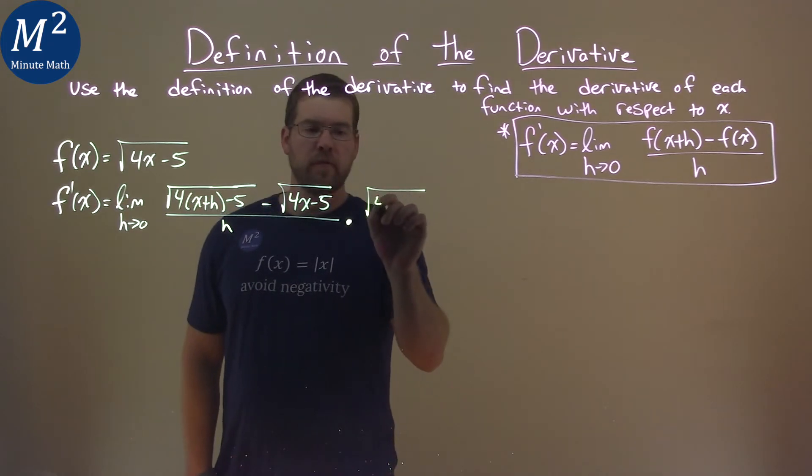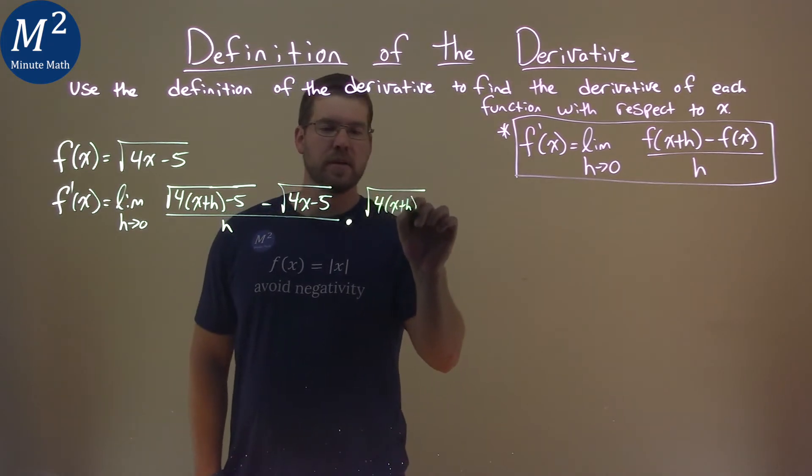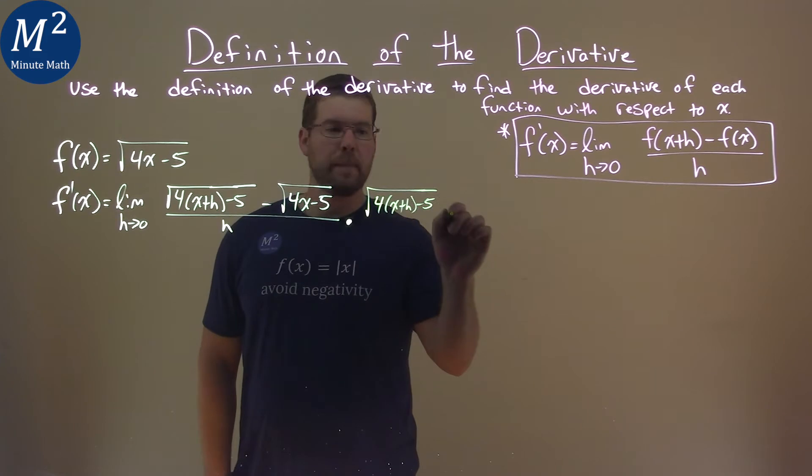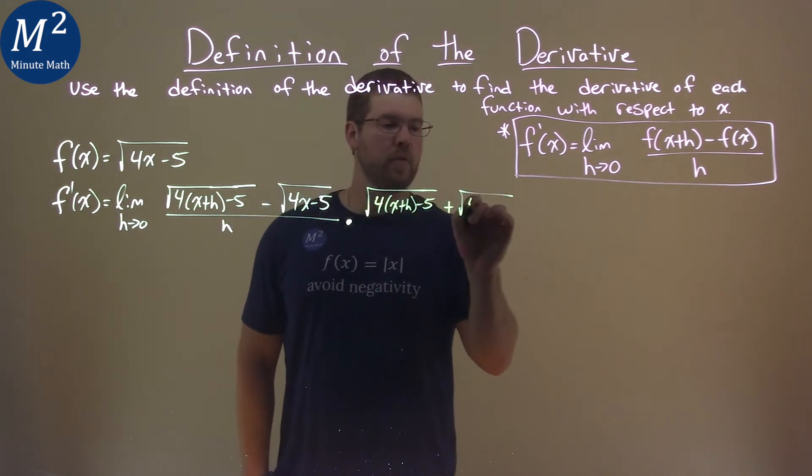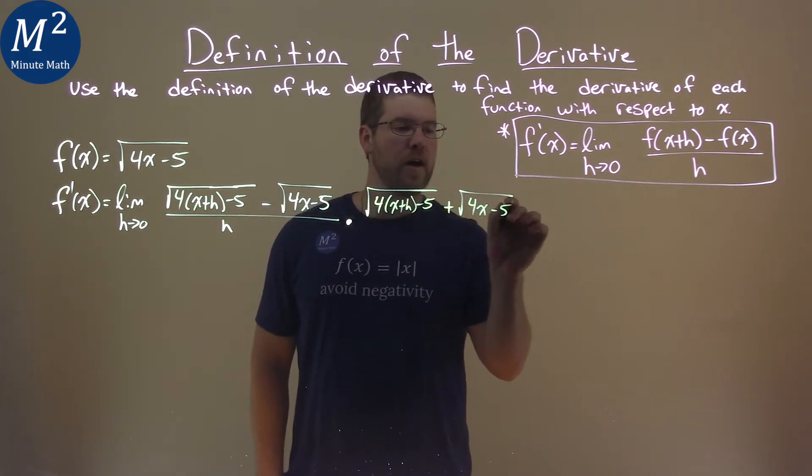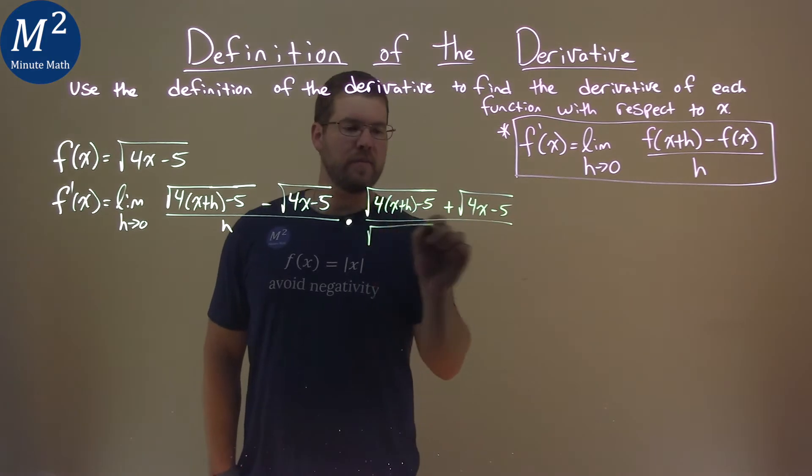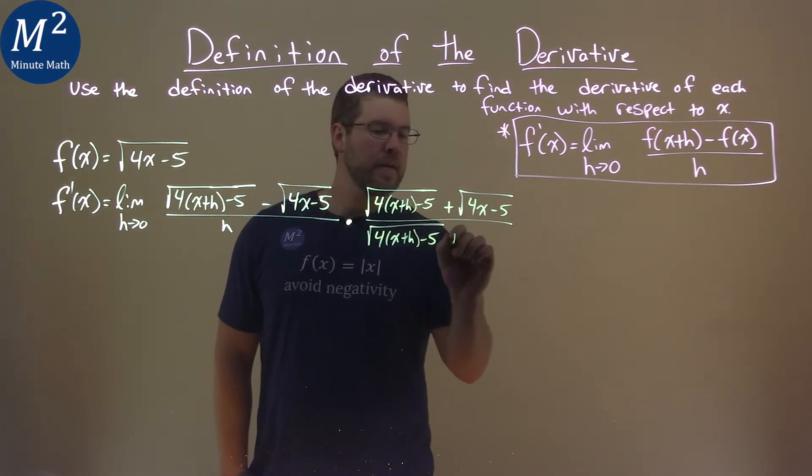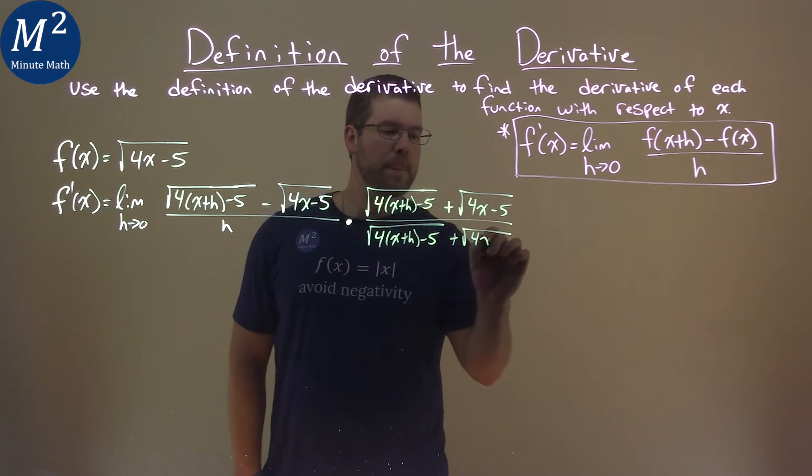Square root of 4x plus h minus 5, plus the square root of 4x minus 5, all over the same exact thing. 4x plus h minus 5, plus square root of 4x minus 5.